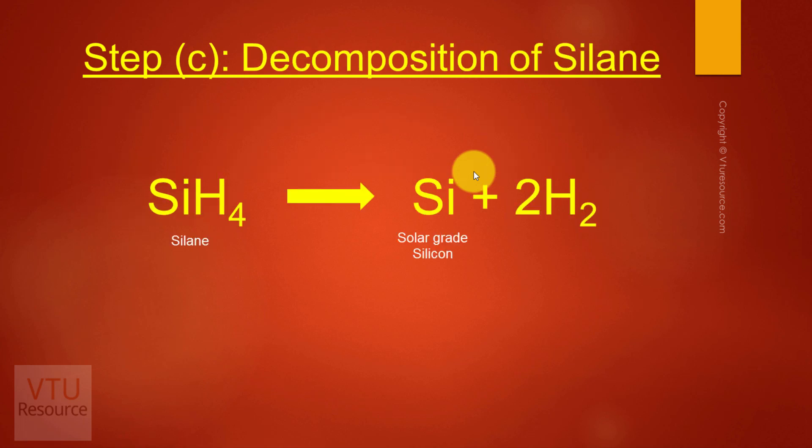The last step is decomposition of silane. Silane is decomposed by a process called pyrolysis, which involves heating to very high temperature where the covalent bonds break and the compound decomposes into its elements. Since silane is made up of silicon and hydrogen, heating it to very high temperature yields silicon — called solar grade silicon — and hydrogen gas is evolved. The solar grade silicon is further purified using the zone refining technique and can then be used to synthesize PV cells, solar cells, or photovoltaic cells.